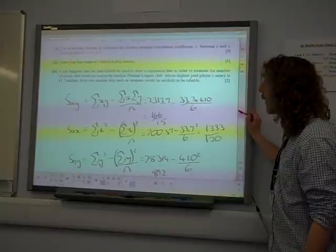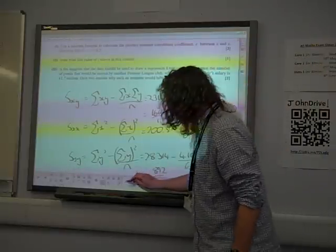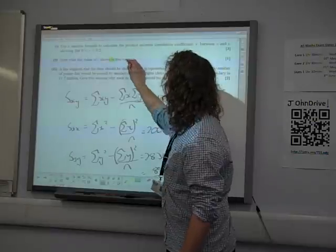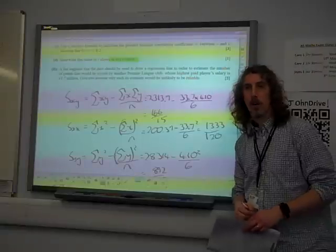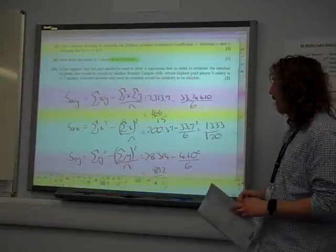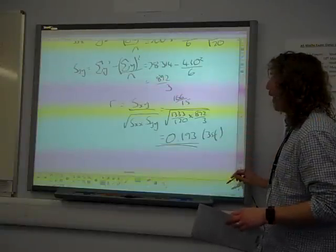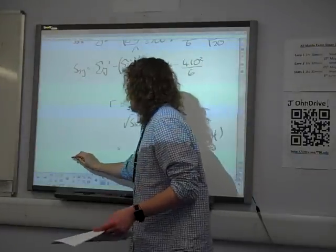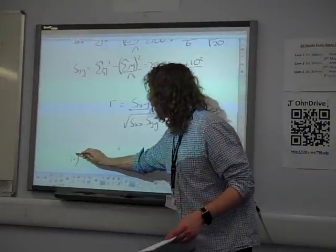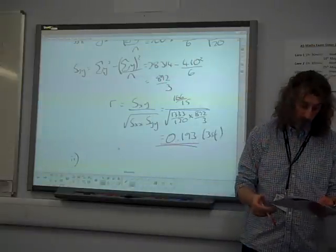So what does it say? And notice here, the statement of this value says, in this context. So quite a few of my students at this point, when we did this as a mock exam, then said 0.193 shows there is very little correlation. So what? That is no good, because that's not in context. It's got to be in context.